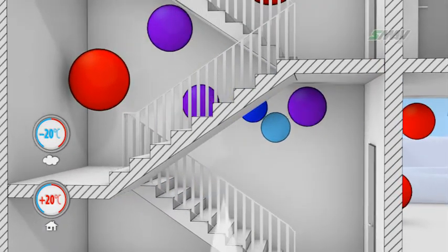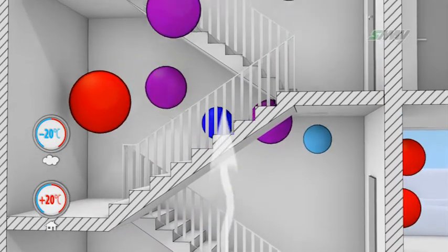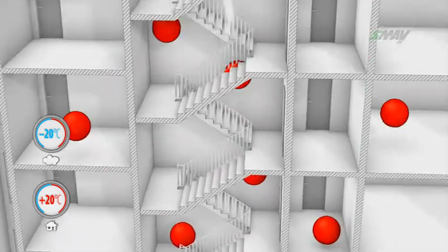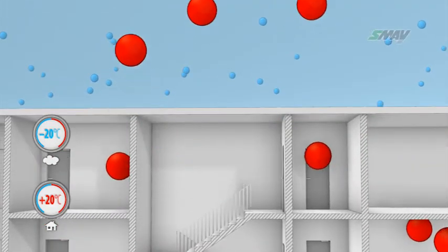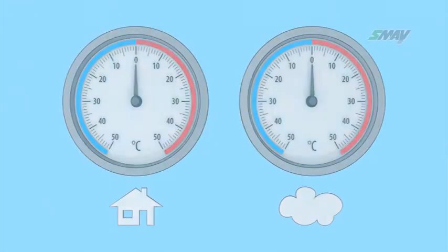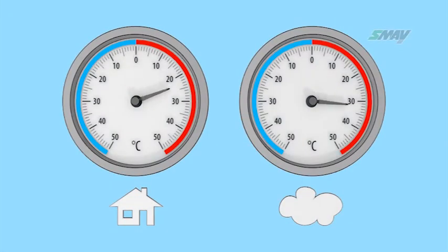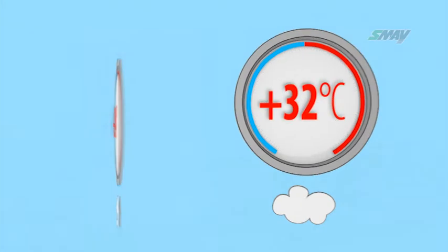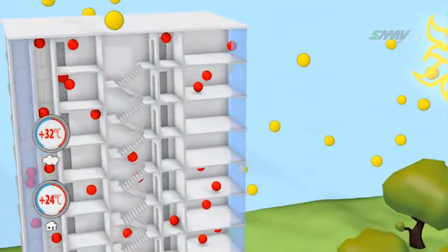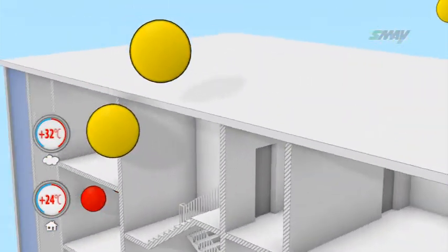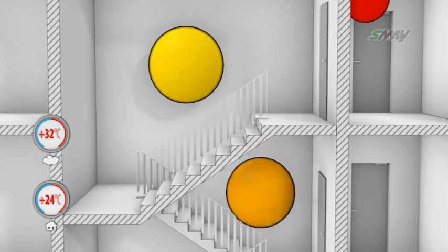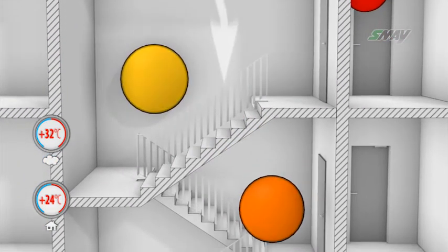The stack effect will always occur if there is a difference in the air temperature between the stairwell and outside. In summer, on the other hand, the hot air from outside seeps in through fissures into the stairwell, cools down and falls, resulting in a pressure distribution opposite to that which can be observed in winter.